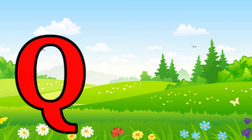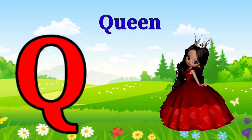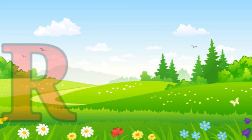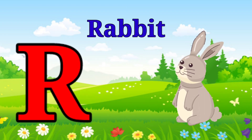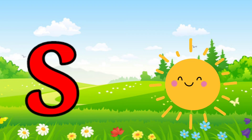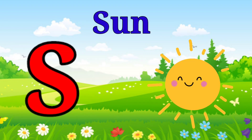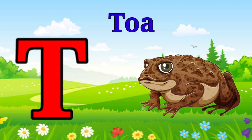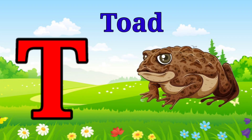Q is for queen, q-q-queen. R is for rabbit, r-r-rabbit. S is for sun, s-s-sun. T is for toad, t-t-toad.